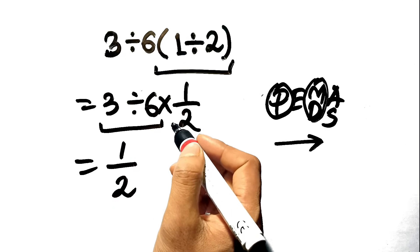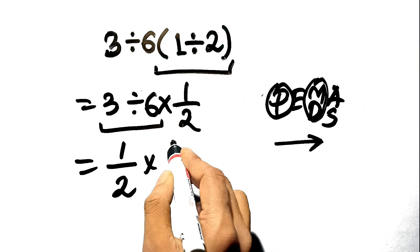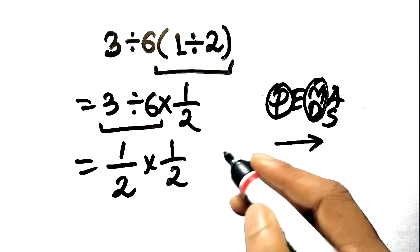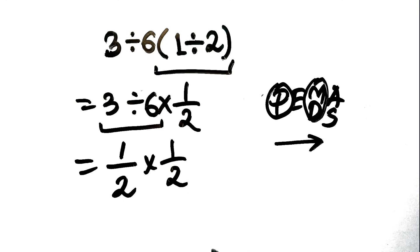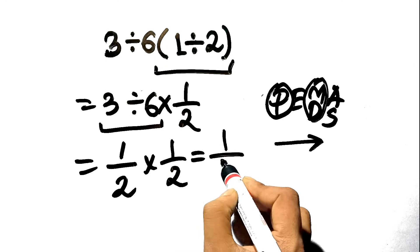Here's what happens next. The problem is now 1 half times 1 half, or 0.5 times 0.5. Final step, perform the multiplication. 1 half times 1 half equals 1 fourth.